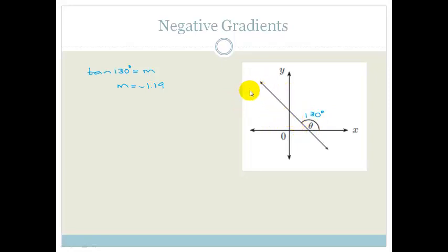But the reason you have to be careful of this negative gradient is, let's say for example you were given the equation that this line is y is equal to minus 2x plus 3. So now we have been given a gradient of minus 2. And say they want the angle of inclination.